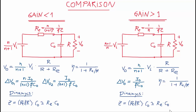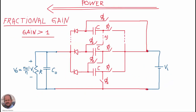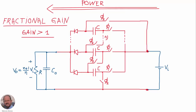If fully bidirectional operation is not required, some switches can be substituted by diodes to simplify the converter. For the fractional gain converter with gain lower than one, certain switches can be replaced by diodes, giving a simpler circuit. Similarly for the gain higher than one case, switches on one side can be replaced by diodes, reducing the number of controlled switches.